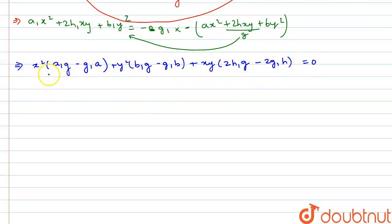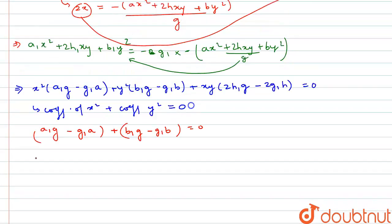And by the condition, we know that for pair of lines in pair of fine equation, if the lines are mutually perpendicular, the condition is that coefficient of x square plus coefficient of y square must be equal to 0. So following this condition, if we find the coefficient of x square that will be a1g minus g1a and coefficient of y square will be b1g minus g1b equal to 0.